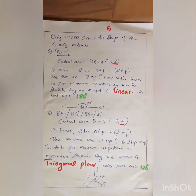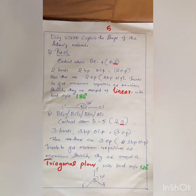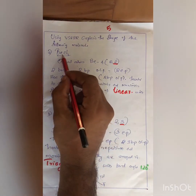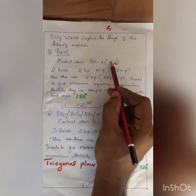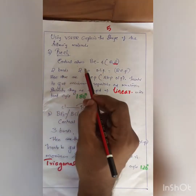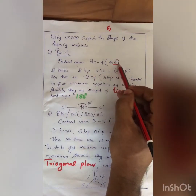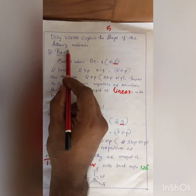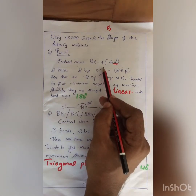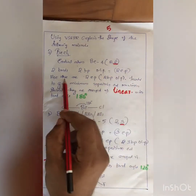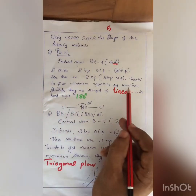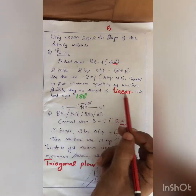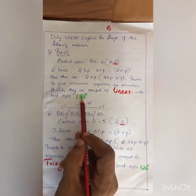These are the postulates of VSEPR theory. The first example is beryllium chloride (BeCl2). The central atom is beryllium, atomic number 4, configuration 2,2. There are two bonds, therefore 2 BP and 0 LP, giving 2 EP total. In order to get minimal repulsion or maximum stability, they are arranged in a linear shape with bond angle 180 degrees.